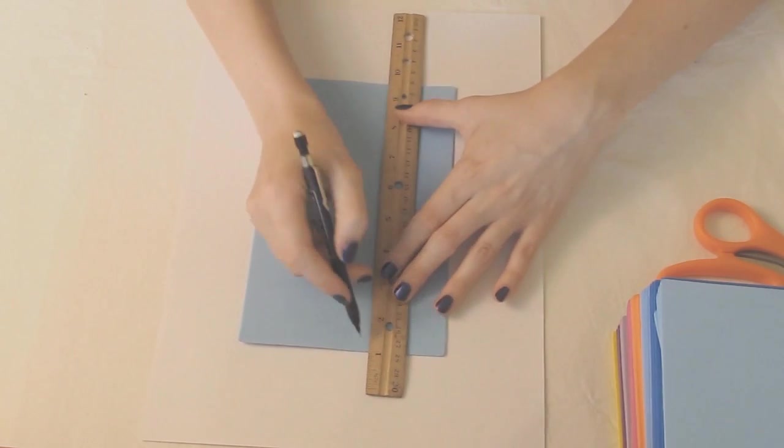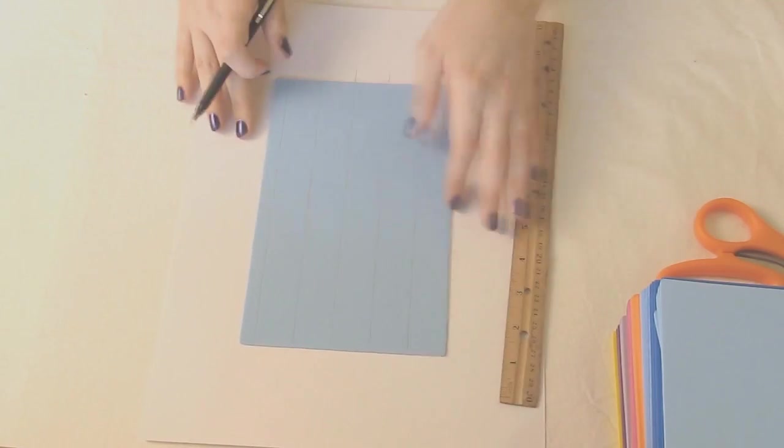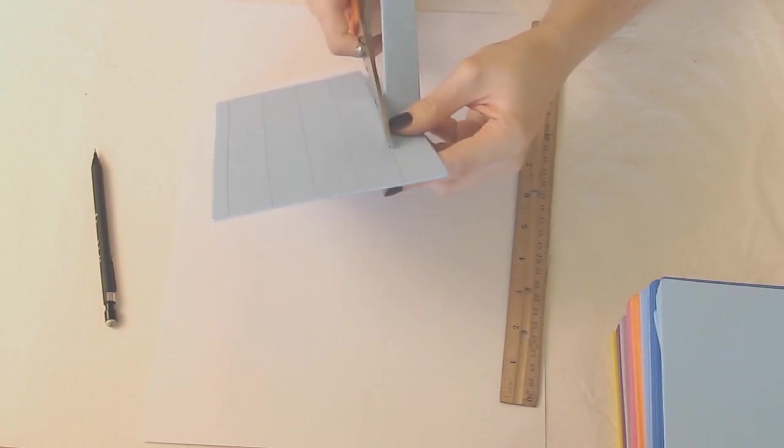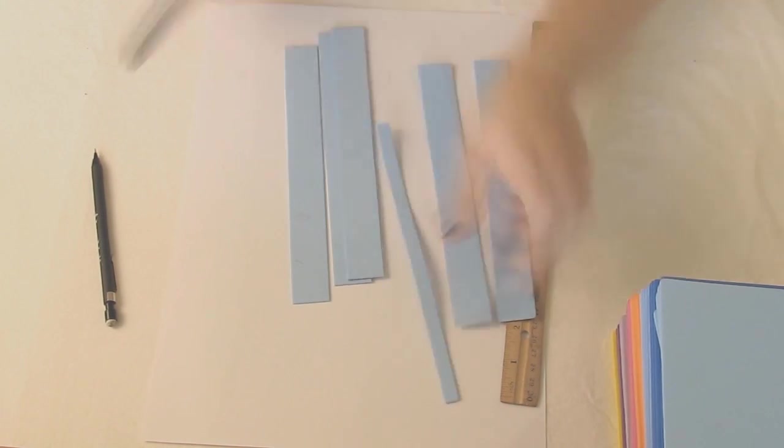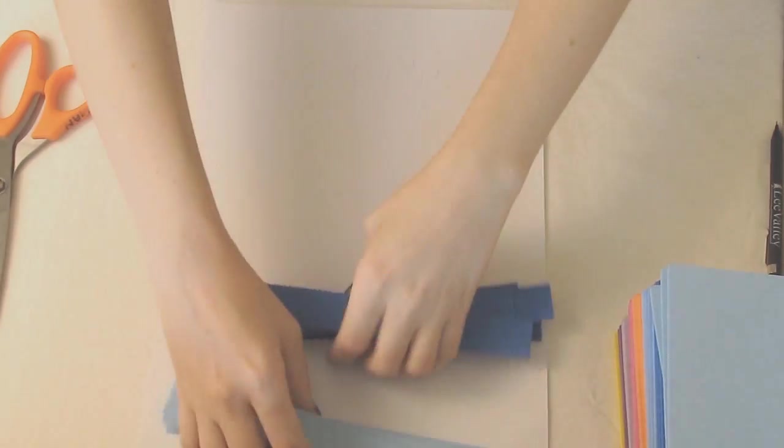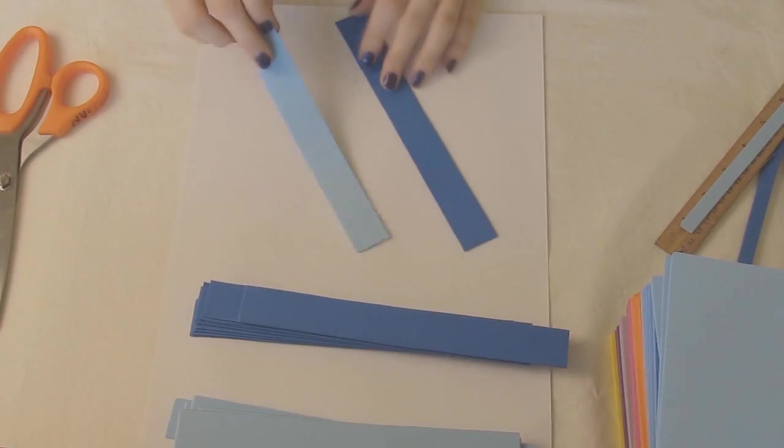I started off by cutting various strips of craft foam that were all of equal width. I used two different colors of craft foam just to help with designing, but we'll be painting everything later so it doesn't matter.